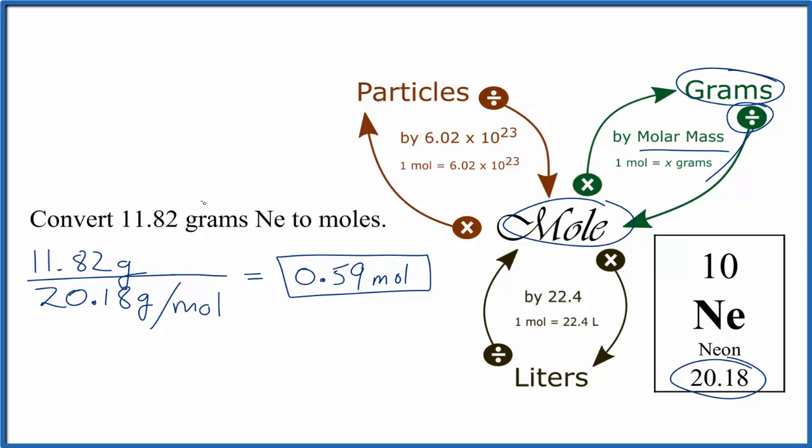So we take the grams given in the problem and then we divide that by the atomic mass of neon, 20.18 grams per mole. Grams cancel out, and we're left with 0.59 moles of neon.